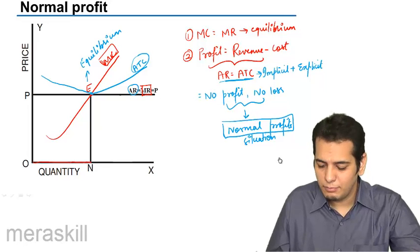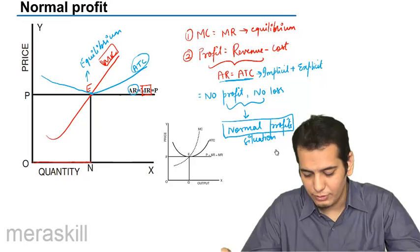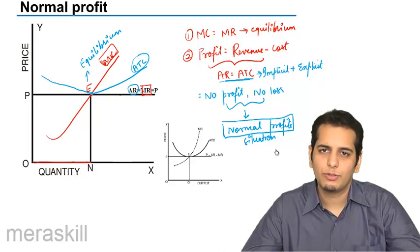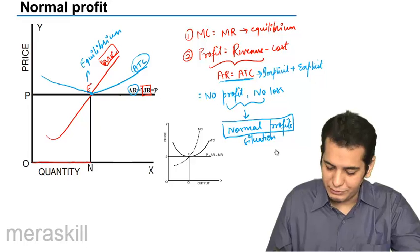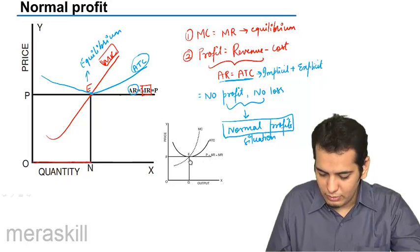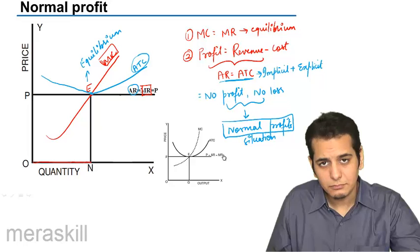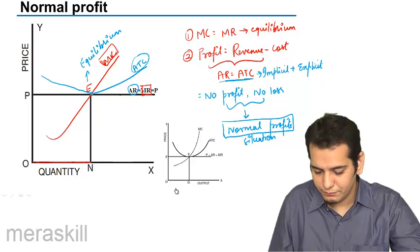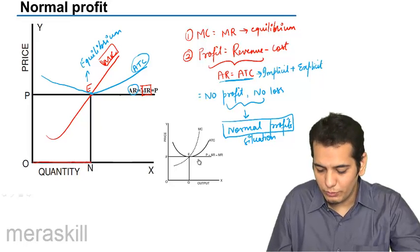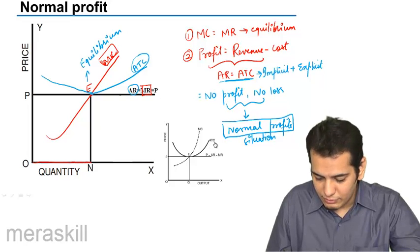So now I will be bringing up a graph which will show you the normal profits. So this is a graph which gives you normal profits. It's a normal profit situation for a firm which is operating in perfect competition. You can see there is an MC curve, there is this MR curve. So they are meeting at this point E. This becomes my equilibrium point. So I will be producing OQ number of units. And now the second condition is AR should be equal to ATC, and this is my ATC curve.